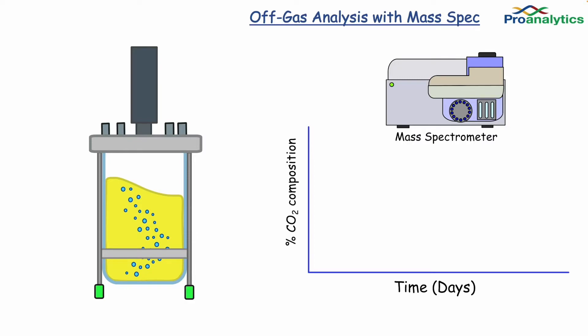Traditional methods rely on mass spectrometers to analyze off-gas. These methods can be time-consuming, but the data is very accurate. Off-line analysis is able to determine the exact parameters needed to control the process, including the concentration of media components.